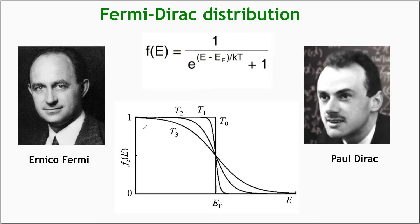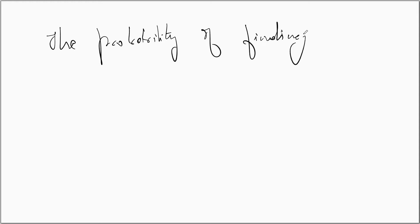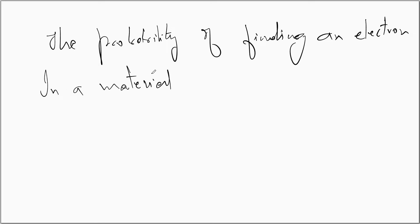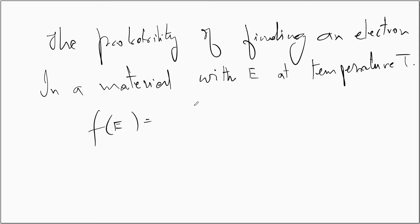The Fermi-Dirac distribution is proposed by Enrico Fermi and Paul Dirac. For short, it is known as the Fermi distribution function or Fermi function. The Fermi function essentially gives the probability of finding an electron in a material with energy E at temperature T. The Fermi function is: F(E) = 1 / (1 + exp((E − E_F) / kT)).